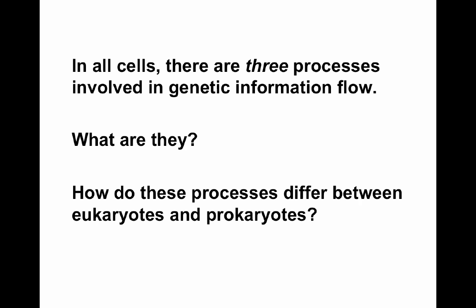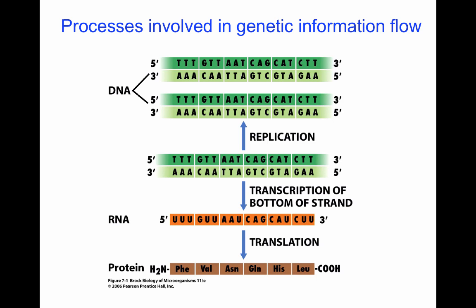Let's look at the information flow in microorganisms. There are three processes involved in genetic flow: DNA replication, transcription, and translation. DNA replication is the main process by which information flows from mother to daughter cells. During transcription, the information in the DNA is put into an RNA molecule. Translation then takes that nucleotide information and translates it into the protein language of amino acids.